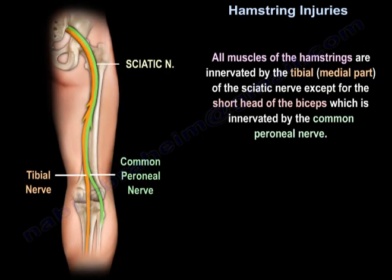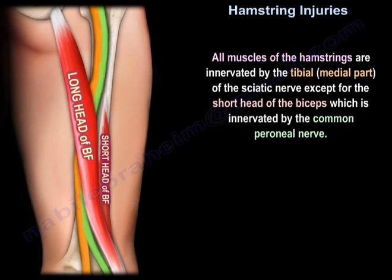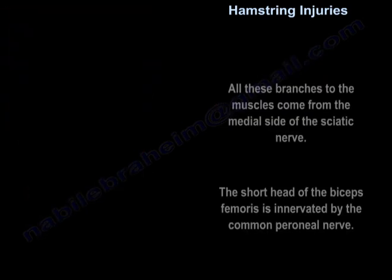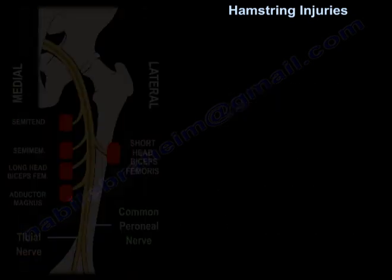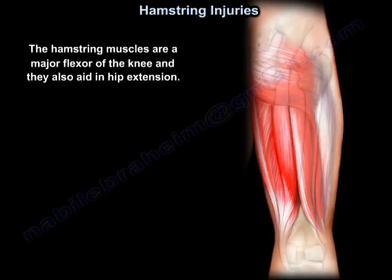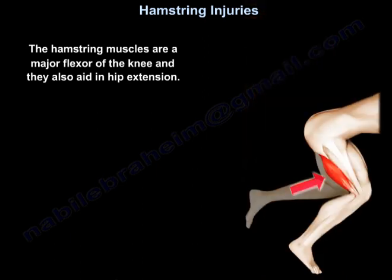All muscles of the hamstrings are innervated by the tibial or the medial part of the sciatic nerve, except the short head of the biceps, which is innervated by the common peroneal nerve. The hamstring muscles are major flexors of the knee and also aid in hip extension.